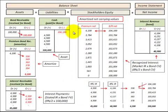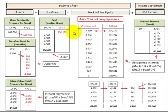In this presentation I'm going to show you how to amortize a bonds receivable purchased at a premium using the effective interest rate method. This bonds receivable is also a held-to-maturity security.